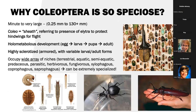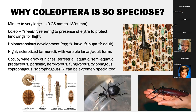So why are they so specious over the other insects? They can be very small to very large — look at that span from a quarter millimeter to more than 130 millimeters. They have the elytra as those forewings, so they're protecting their hindwings. They have holometabolous development: the egg, the larval stage, that pupal stage where so much is going on and they can resist desiccation. Then we have the adult stage. A lot of beetles are also highly sclerotized — they're armored, they're thick, they're like little tanks.